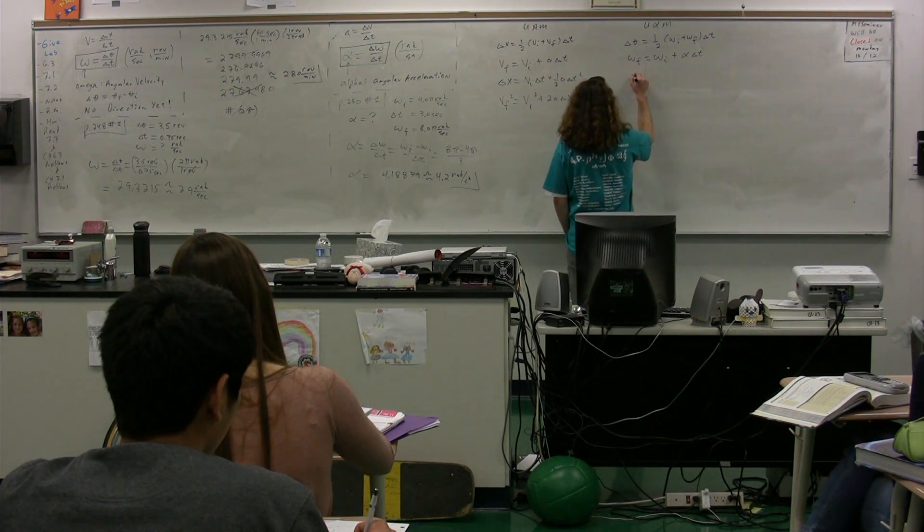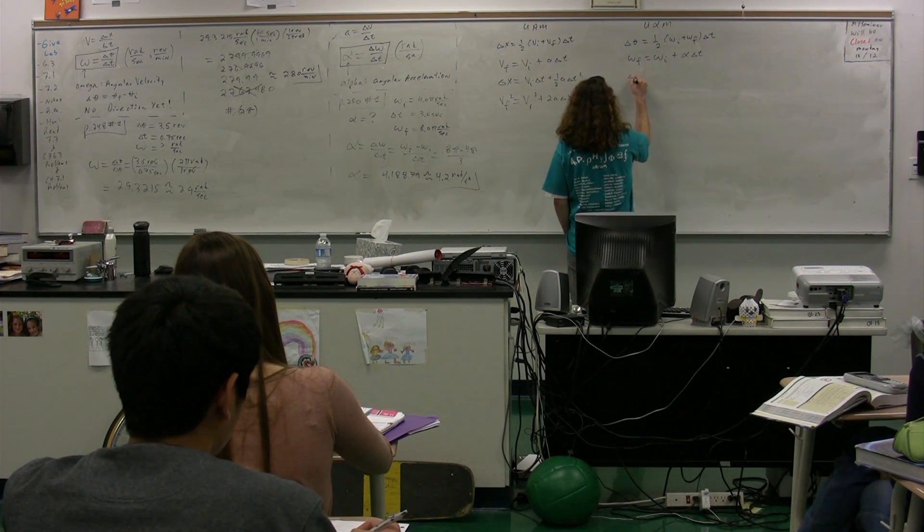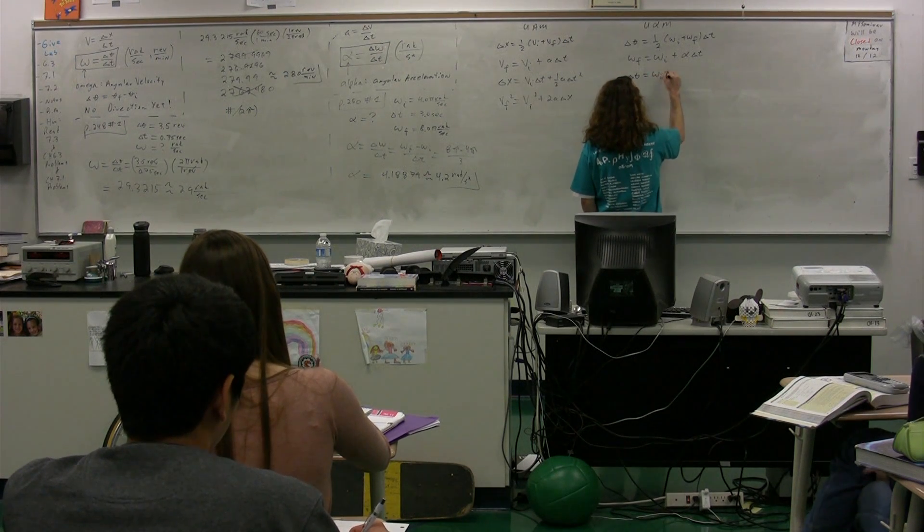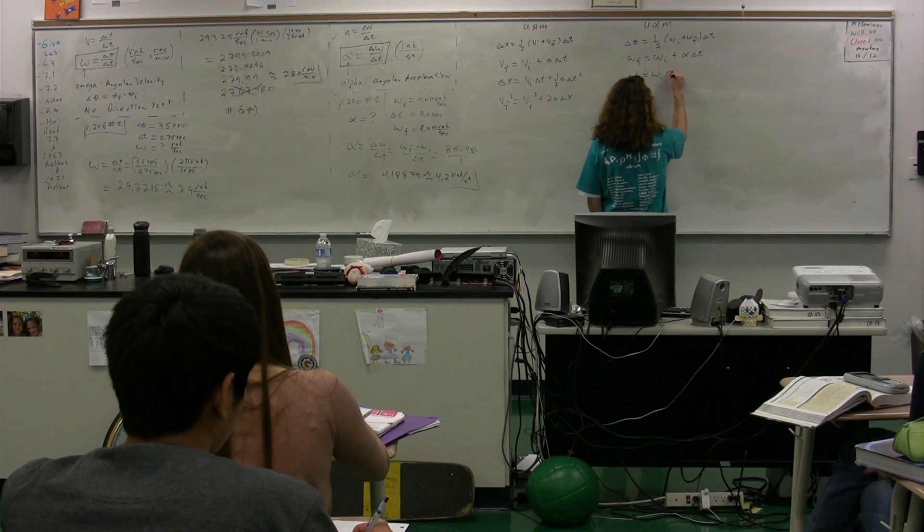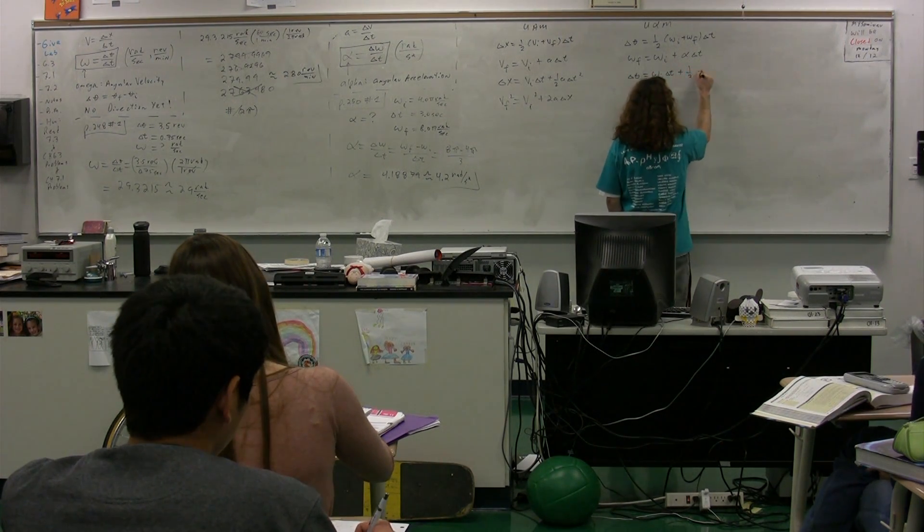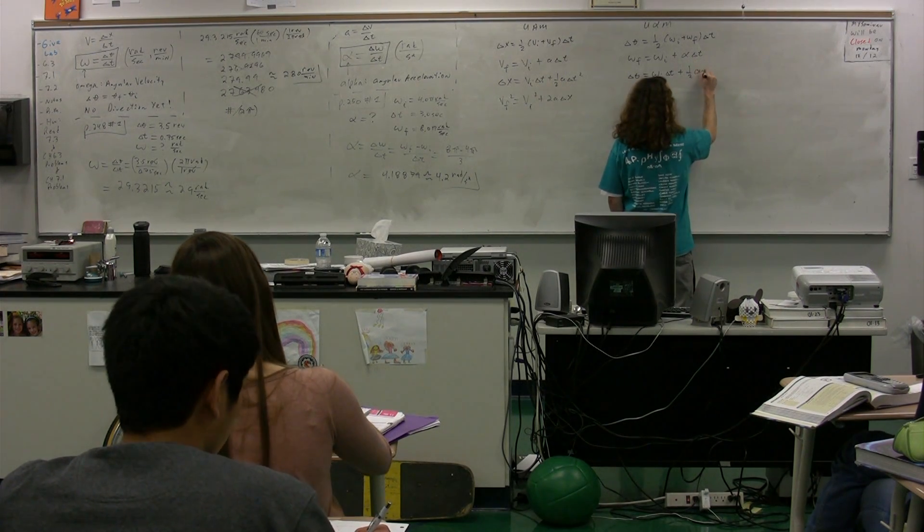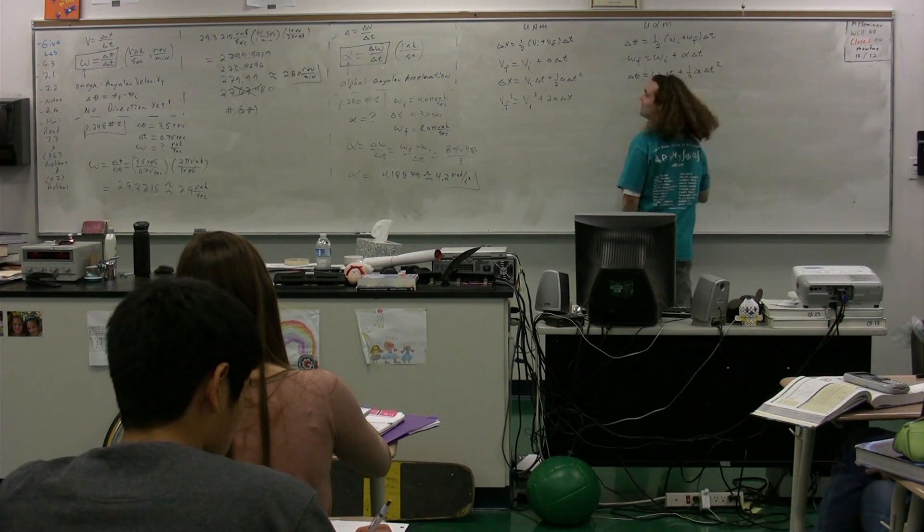What is the third of the U-Fishy-M equations? Erin? The third one would be delta theta equals omega initial delta t plus one-half A delta t squared. A? A-Fishy. A-Fishy. No, just Fishy. Times delta t squared.